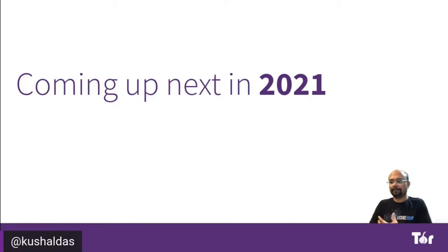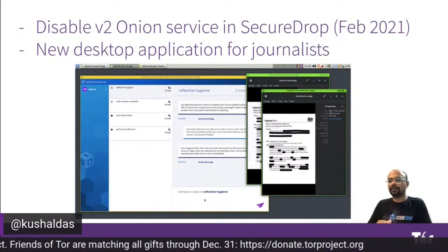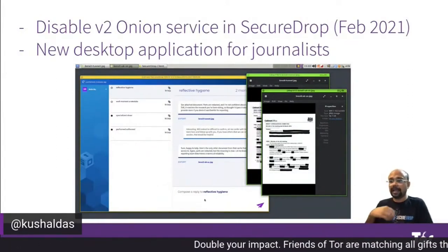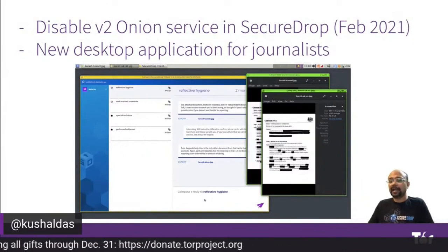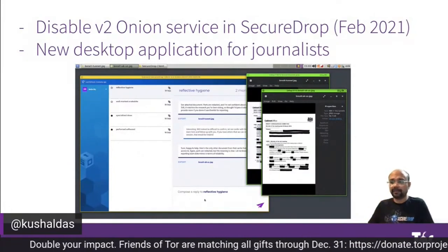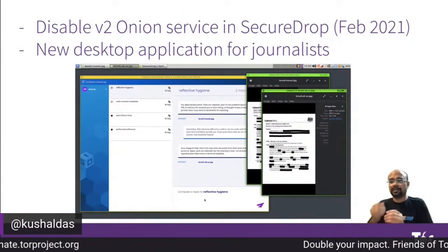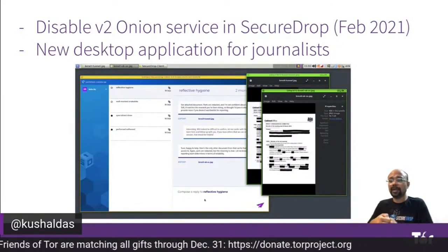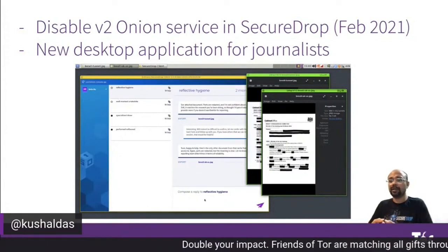What's coming up in 2021? As I mentioned earlier, we are going to disable V2 Onion address support. We are going to do that in February 2021, so that it still provides some time before the Tor project itself disables V2 Onion service. Along with this, we are also developing a new desktop application for journalists which runs on top of Qubes OS and connects to the same Onion service with client authorization, so that only journalists via this application can reach it. They can download all the encrypted material and view it within a single computer, which will drastically reduce the time for their workflow. Right now this application is in beta and you can look at the source code on GitHub, but we hope in the coming year more news orgs will start using this tool and adopt the newer technologies.